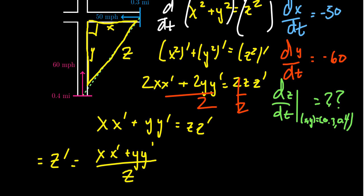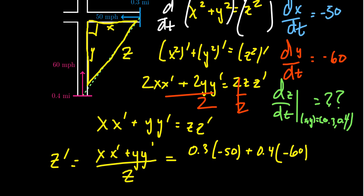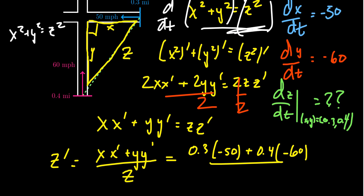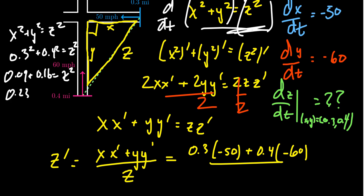We need the derivative when x = 0.3 and y = 0.4. For z, we use x² + y² = z²: 0.3² + 0.4² = 0.09 + 0.16 = 0.25 = z², so z = 0.5. This is just the classic 3-4-5 triangle scaled by 1/10. Multiplying top and bottom by 10, the expression becomes (3·(−50) + 4·(−60)) / 5 = (−150 − 240) / 5 = −390 / 5 = −78.